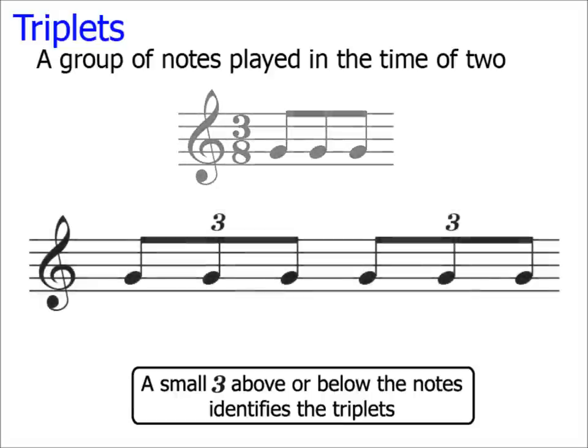This bar, however, shows two sets of triplets. In fact, it's a full bar of triplets in 2-4. The three must appear above the notes to show that they are triplets.